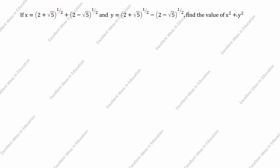First we will take a = (2+√5)^(1/2) and b = (2-√5)^(1/2). In x, this term is a and this term is b; this is plus. In y, this term is a and this term is b; this is minus. So x = a + b and y = a - b.